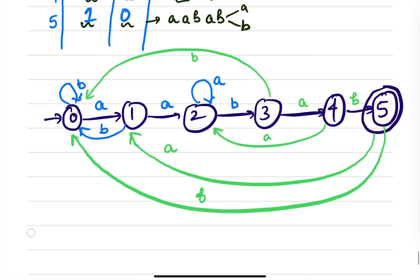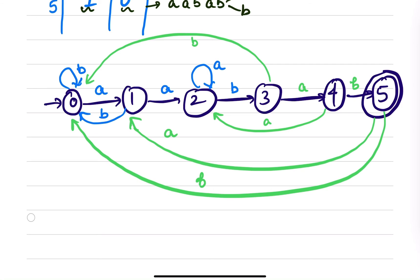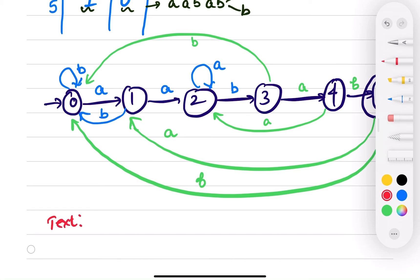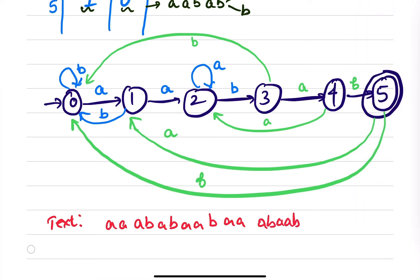This is your automata. Now you have to traverse the string — give the text string as input. Your text string is 'aaababab'. Starting at state zero: take 'a' → go to one; take 'a' → go to two; take 'a' → stay at two; take 'b' → reach three; take 'a' → reach four; take 'b' → reach five, the final state. You have reached the final state, so the pattern is found in the text.